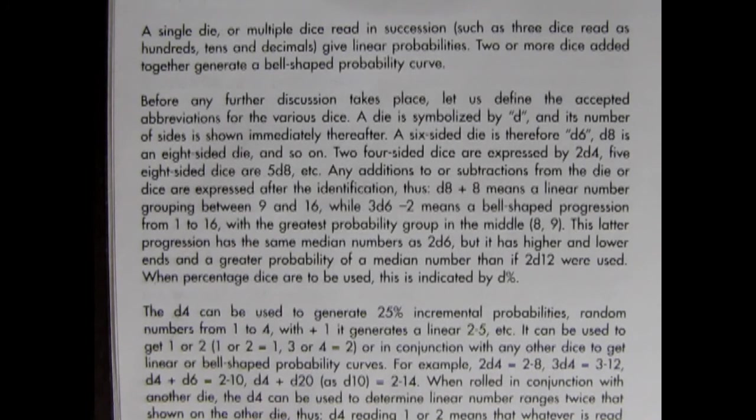Before any discussion takes place, let us define the accepted abbreviations for the various dice. A die is symbolized by D and its number of sides is shown immediately thereafter. A six-sided dice is therefore D6, D8 is an eight-sided die, and so on. Two four-sided dice are expressed by 2D4, five eight-sided dice are 5D8, etc.